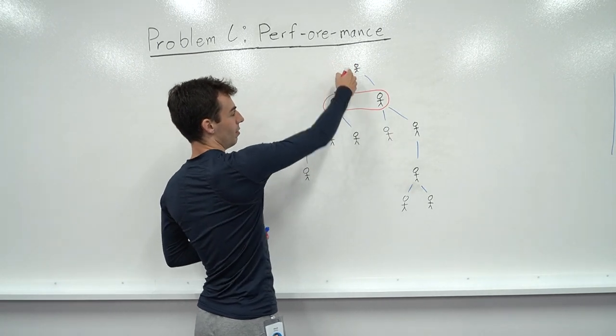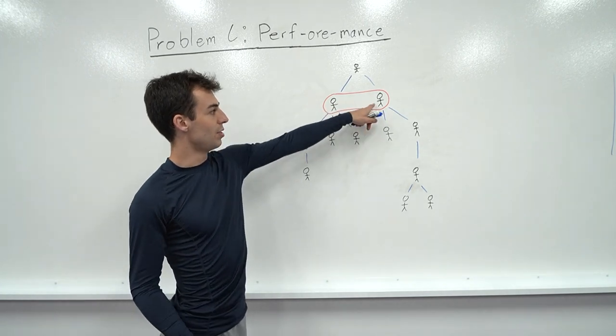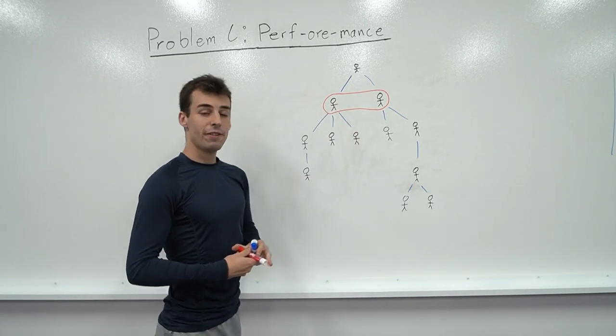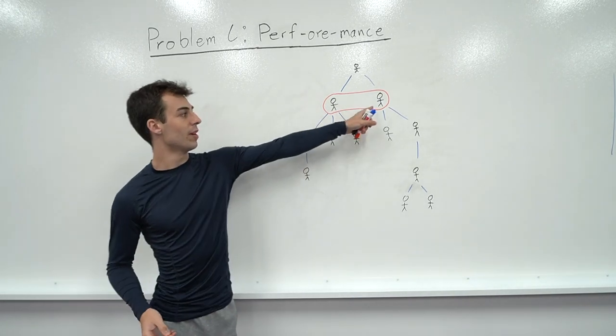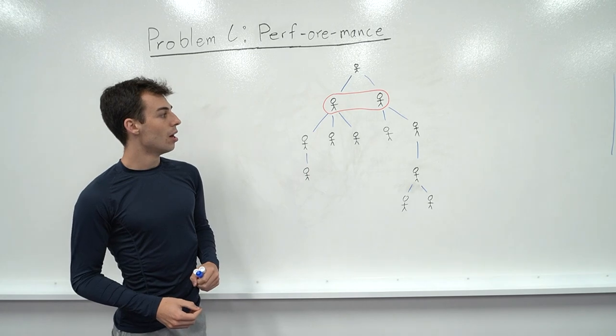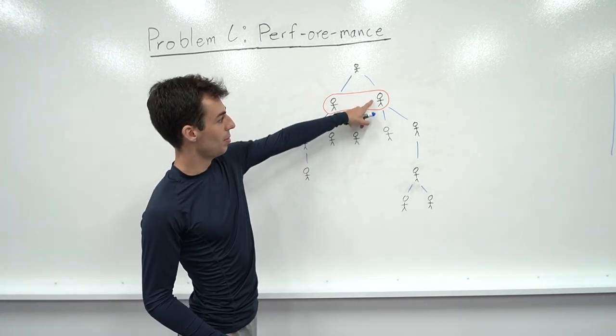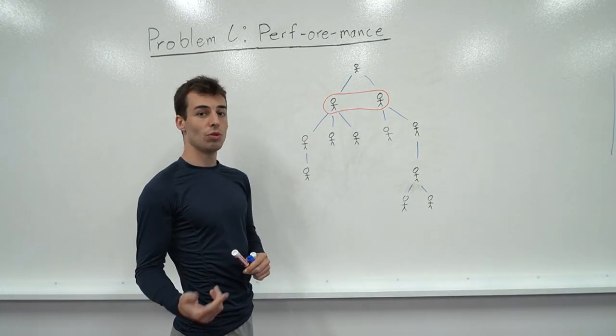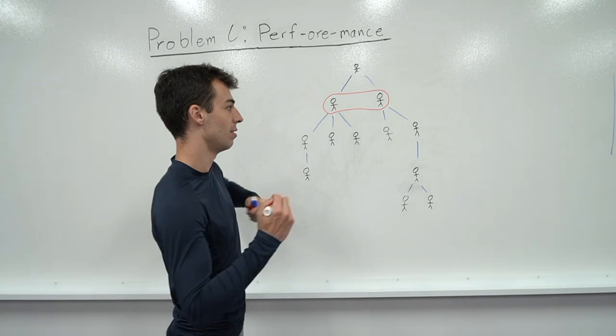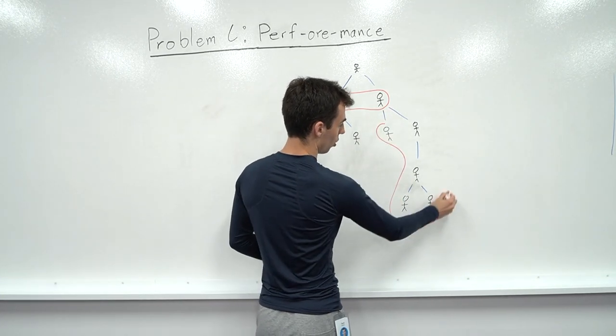So for instance if we pick this individual, the manager, we look at all the people who directly report to them, for instance these two people, we can figure out the sum of their contribution. The other query we can do is we can pick some individual, maybe we pick this individual, and we can find the sum of values of everyone who reports directly or indirectly to this individual. So if we picked this individual we would get the sum of all of these values.